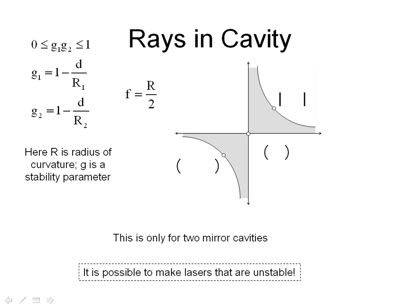What you saw from that little demonstration is that if I have a light source and I put mirrors around it, in some configurations the light gets trapped between those mirrors and in other configurations the light escapes.